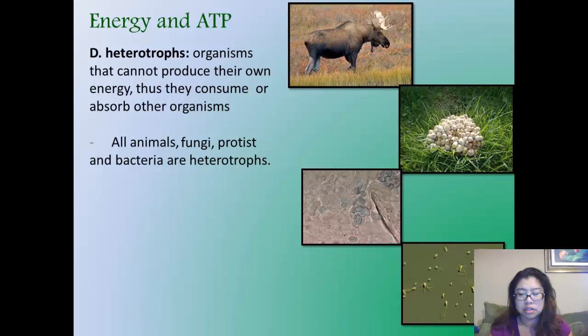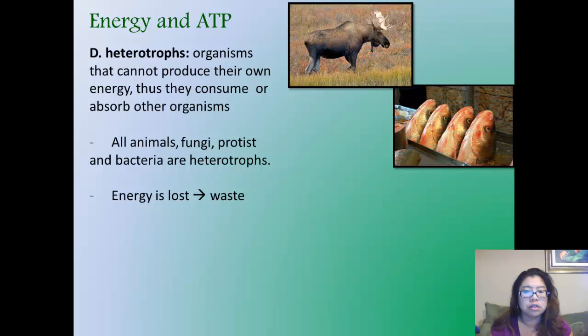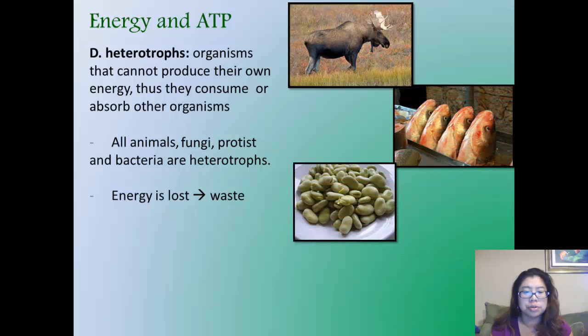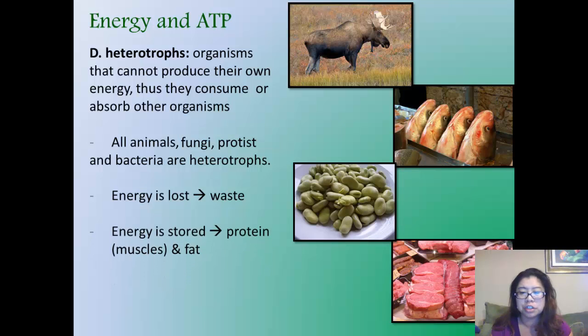You can tell this is a still picture of bacteria moving around. They look like they have tails on them. They're actually their flagellas, which allows them to move around. In heterotrophs, energy is lost through their waste. Energy is also stored in protein. Proteins such as fish, beans, and part of the legume family, or meat.